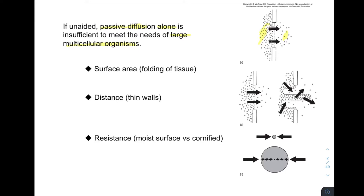One way to aid diffusion is to increase the surface area of the surface that is absorbing the material. We can compare a picture where we have no folding in the epithelium versus one where, within that same space, we have folded epithelium — that allows for more entryways of gas from one side of the membrane to the other. We also need to thin the walls of this membrane to make the distance that particles need to travel small.